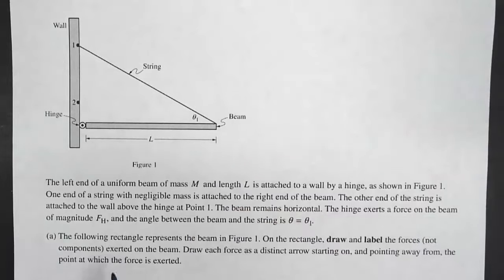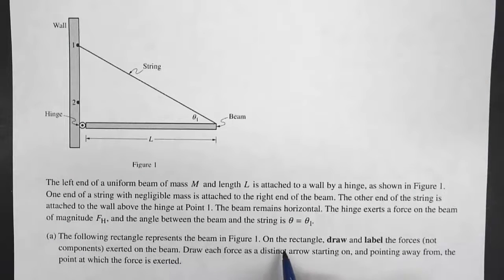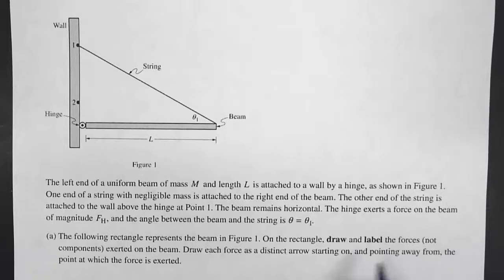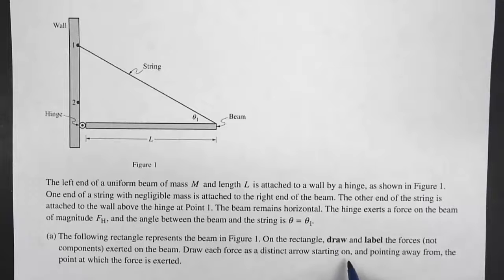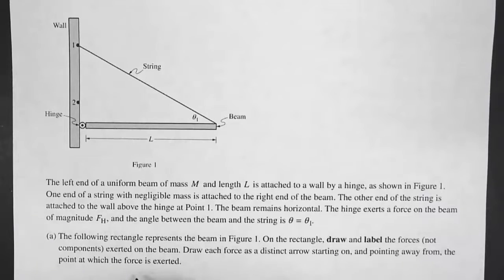The following rectangle represents the beam in figure 1. On the rectangle, draw and label the forces — not components — exerted on the beam. Draw each force as a distinct arrow starting on and pointing away from the point at which the force is exerted.